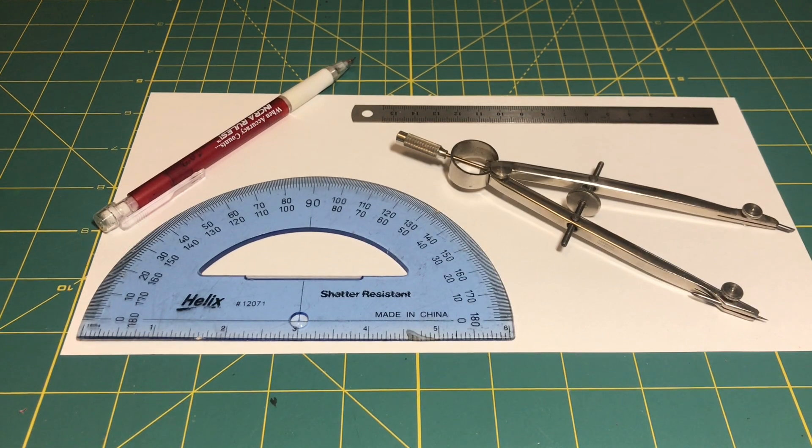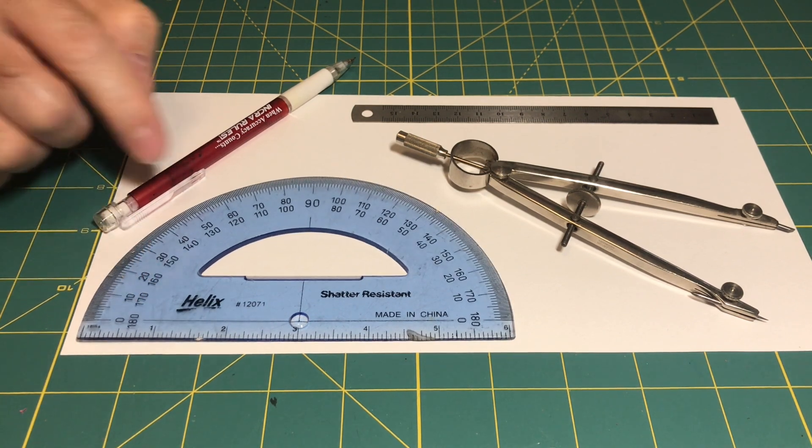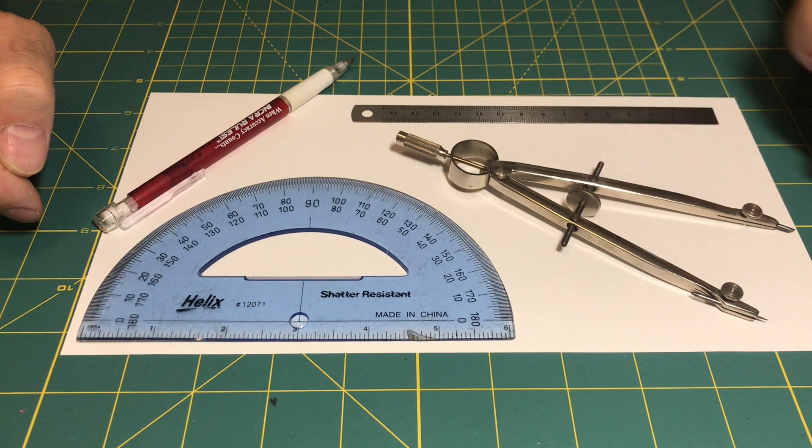This is a demonstration of how to draw a pentagon of a given side length using a protractor, a pencil, a straight edge, and a compass.